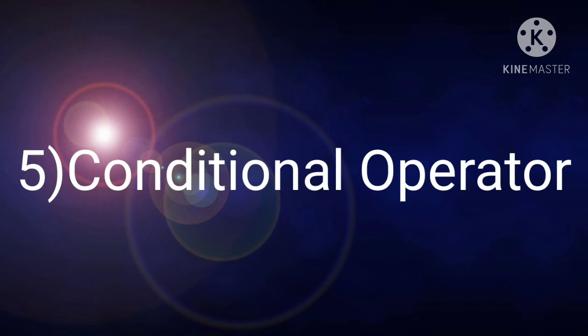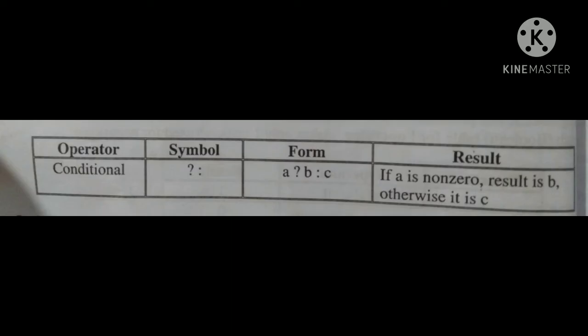The conditional operator table shows operator, symbol, form, and result. Symbol is question mark and colon (?:). Form: A ? B : C. Result: if A is non-zero, result is B; otherwise it is C. This is equivalent to an if-else statement.